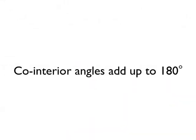Once you know how to find co-interior angles, then you need to know the angle rule, which is that co-interior angles add up to 180 degrees. So if you've got a pair of co-interior angles and you add the size of them together, you will always get 180 degrees.